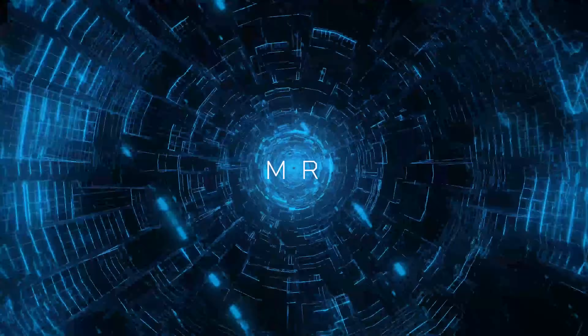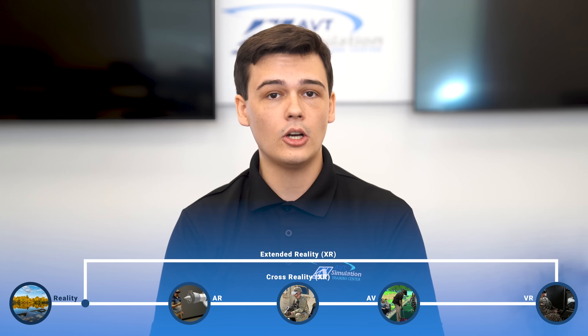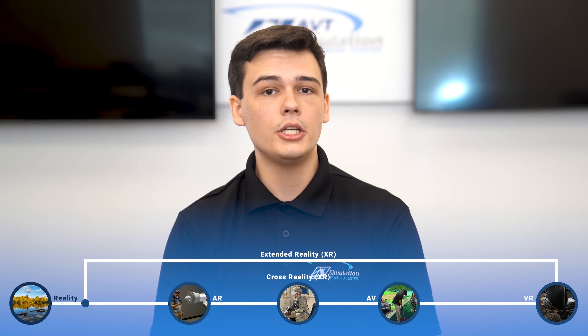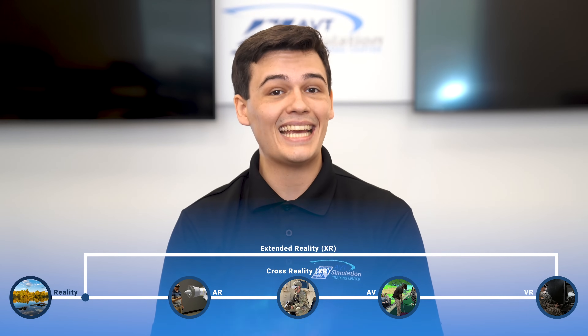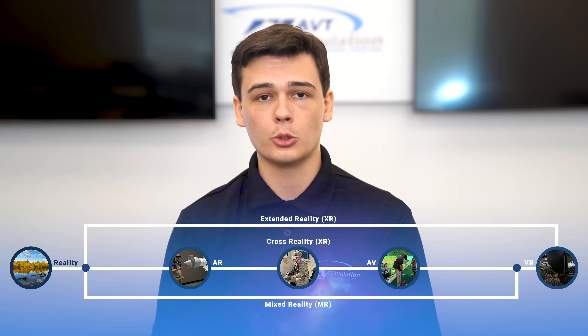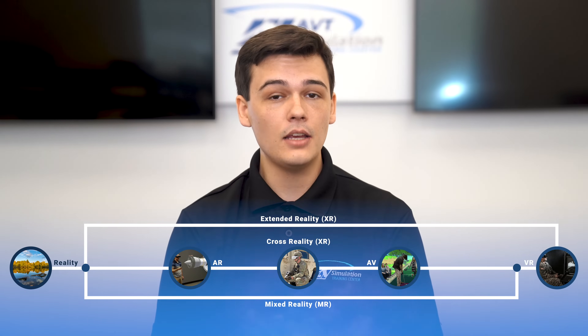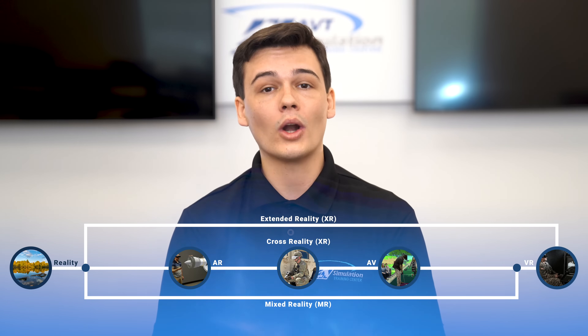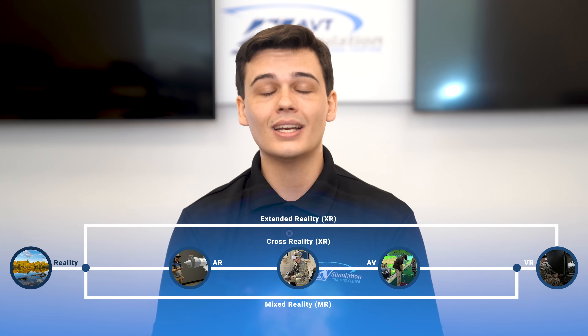Now on to mixed reality, where things start getting a little confusing. Currently, in the modern MS&T industry, MR is used to refer to augmented virtuality. However, its original definition is a bit different. While MR includes AV, mixed reality is really a spectrum between VR and the real world. As Milgram and Casino put it, mixed reality is anywhere between the extrema of the virtual continuum, meaning mixed reality is any form of XR that is a merging or integration of real and virtual environments.